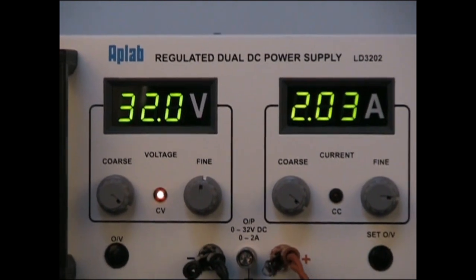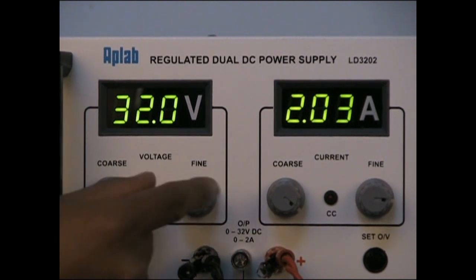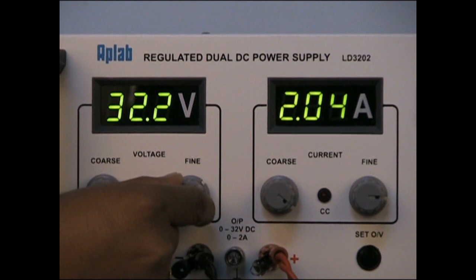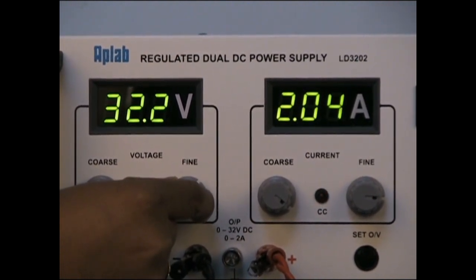The potentiometers provided on the front panel are used to set the desired voltage and current. They can be adjusted precisely through coarse and fine controls.